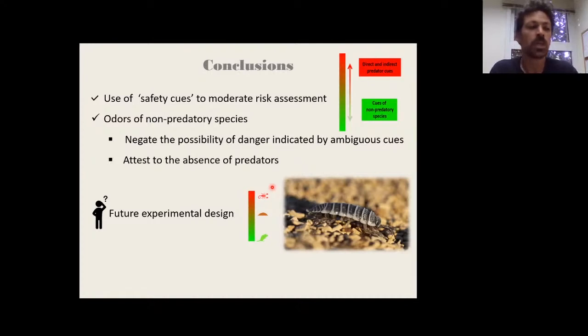They use it to moderate the risk assessment. Specifically, we were focusing on odors of non-predatory species. What we show is how they negate the possibility of danger indicated by the mound, which is an ambiguous cue. But also cues of non-predators can attest to the absence of predators and also in this way moderate the risk assessment. The implication of this study is first methodological because many experiments that test perception of risky cues use cues of non-predators as the control. Now we know this cannot longer be done because these cues themselves might affect the risk estimation. Therefore, what we need to do, for example, if we talk about auditory where it's very common, we have to use kind of a silence or a white noise or whatever, something which is no cue. Also, we need to go farther and check what are the implications on decision making, like for example, foraging, how the use of safety cues affects how animals make decisions.